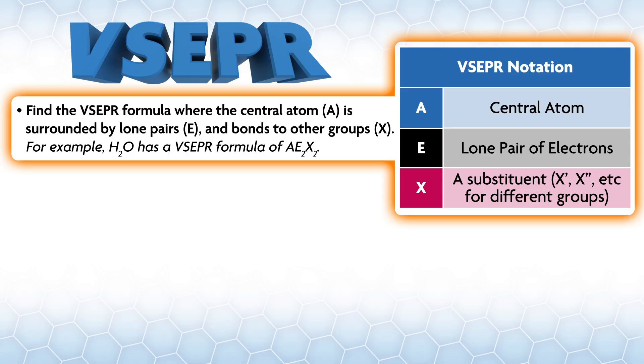If you make the group with a double bond less electronegative by switching from oxygen to CH2, it takes up even more space. In summary, here are a few bullets for finding VSEPR structures: Find the VSEPR formula where the central atom A is surrounded by lone pairs E and bonds of other groups X.